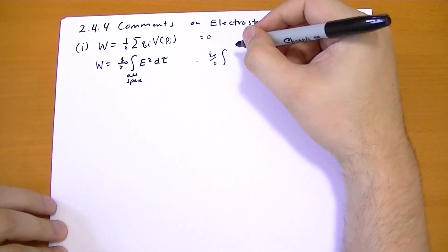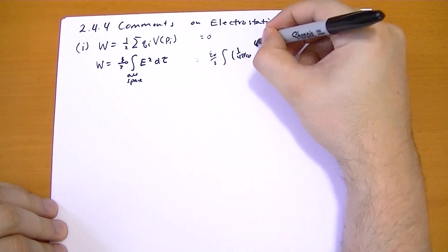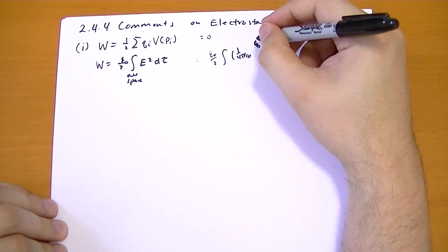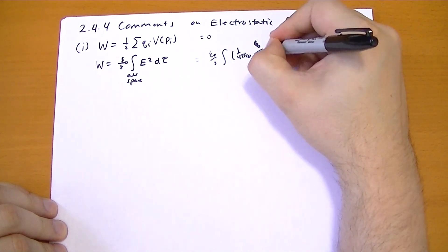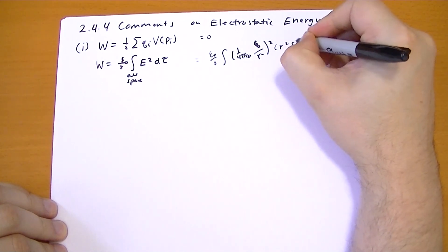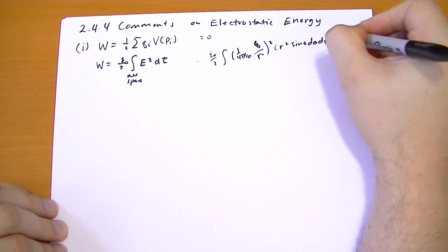This guy would give you, however, integral over all space of e squared. So that's 1 over 4 pi epsilon not q over r squared squared times r squared sine theta d theta d phi and dr.